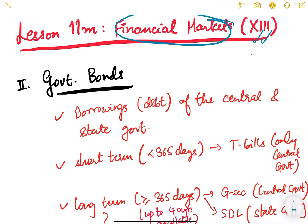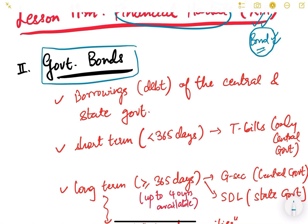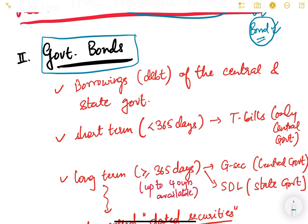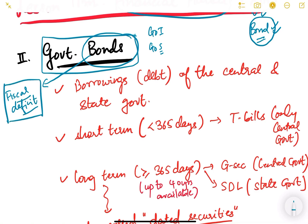We were discussing the bond market in India, and this is the fourth or fifth video of this subtopic. Let us discuss government bonds in today's video. Government bonds are basically bonds issued by the government — either the Government of India or a state government — and the government issues bonds to finance its fiscal deficit.